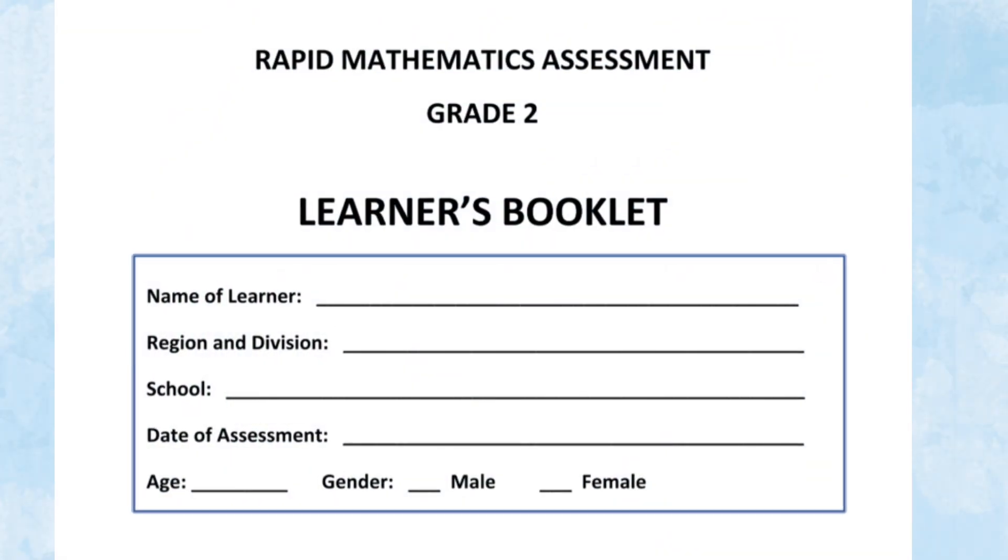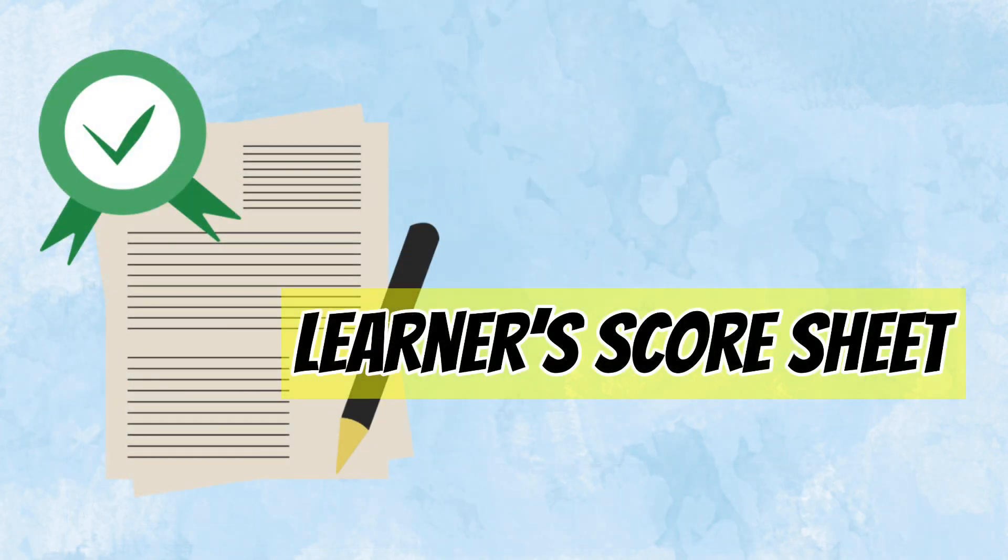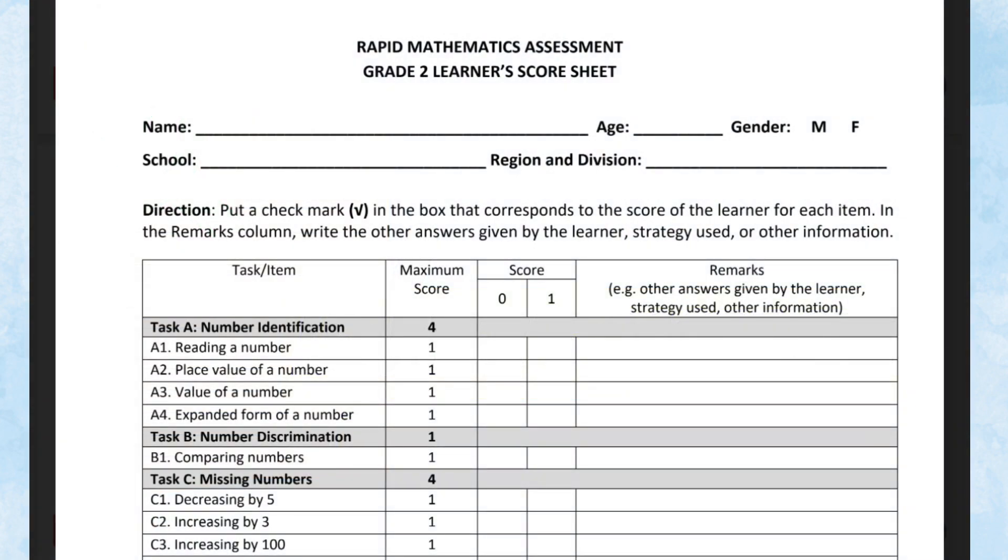After filling out this information, you may now proceed. The Learner's Score Sheet is where you indicate the score of the learner for each item. You will also see a column for remarks where you write incorrect answers, strategy use, and other important information regarding the learner's responses.